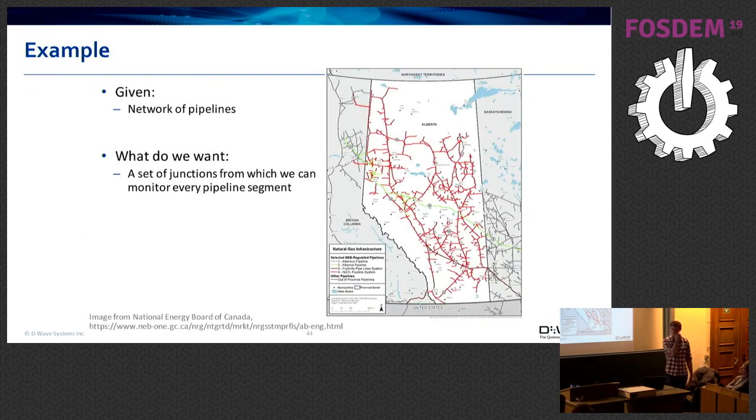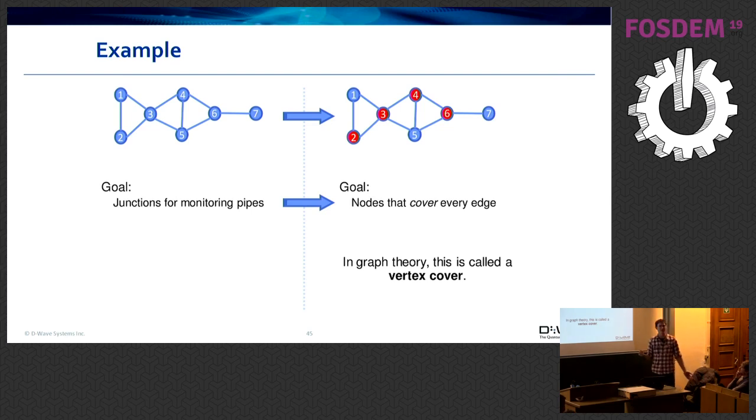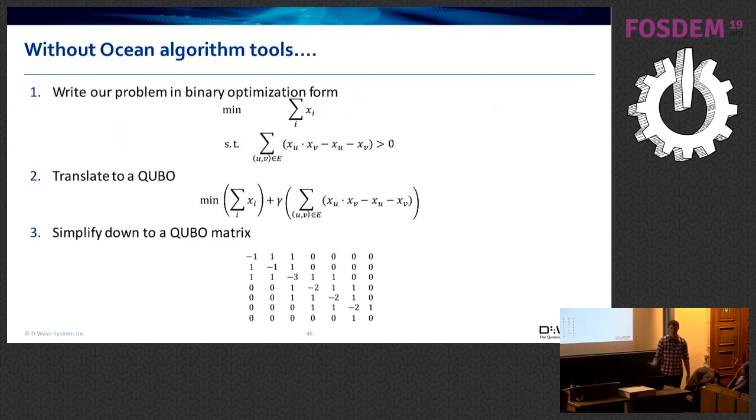So just to make this a little bit more concrete, I'm going to give an example. Say that you have a network of pipelines, and the question that you're trying to solve is, I need a set of junctions from which we can monitor every pipe in the segment. So I need to have a sensor sitting at some subset of the junctions, preferably a minimal subset because I don't want to spend a lot of money, such that every single pipe is adjacent. This is a vertex cover problem, a minimum vertex cover. So what you want to do is find the set of nodes that are adjacent such that every edge has at least one node adjacent to it.